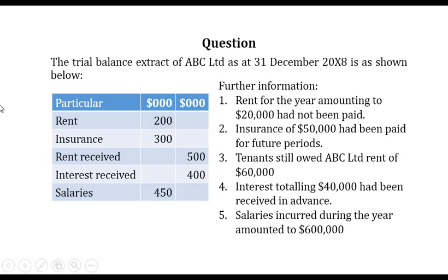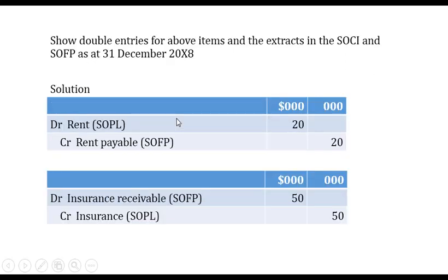We paid rent of two hundred thousand dollars, but note one tells us rent for the year amounting to twenty thousand dollars had not been paid — that is an accrued expense of twenty thousand dollars. We are still liable to pay twenty thousand, so it's a liability. This amount should be added to rent paid to record the total amount that should have been paid in the year, since on an accrual basis we record the cost incurred, not the cost paid. The double entry: debit rent twenty thousand dollars as an expense in the income statement, and credit rent payable twenty thousand dollars as a liability in the statement of financial position.